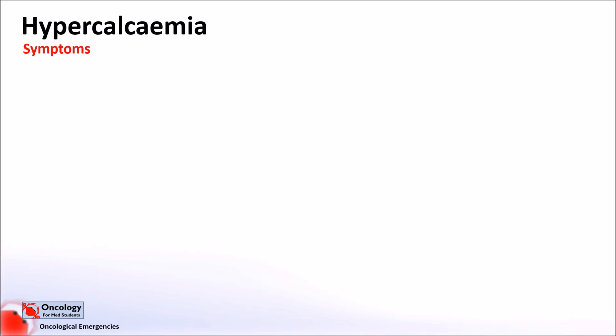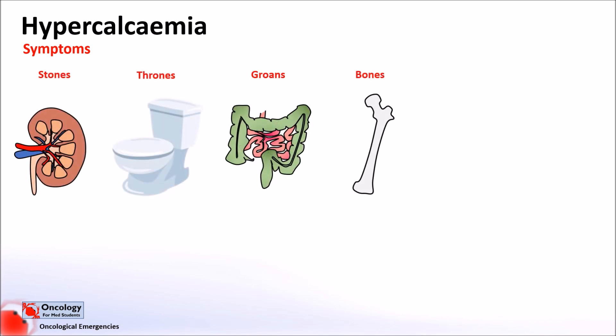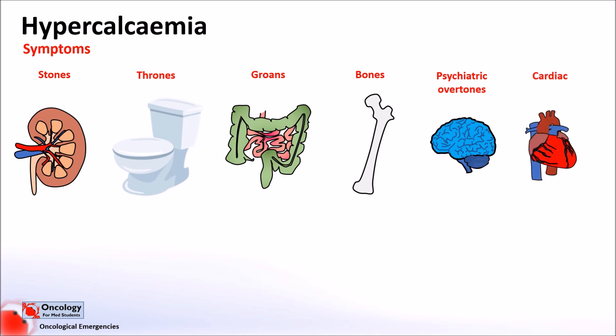Symptoms depend on how severe the hypercalcaemia is and how quickly its onset is. Often in malignancy-related hypercalcaemia, it's both severe and rapid in onset, leading to significant symptoms. A common way of remembering the symptoms is the rhyme: stones, thrones, groans, bones and psychiatric overtones. In addition to this, we'll add cardiac effects on the end — which unfortunately doesn't rhyme — but we need to include those important cardiac symptoms.